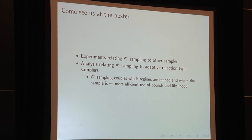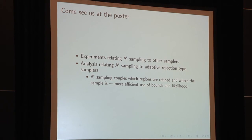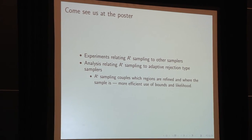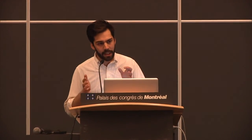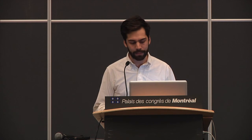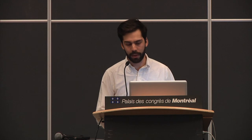At this point I'd normally tell you about experiments, but there isn't a lot of time. We've done interesting experiments relating A-star Sampling to other samplers — please visit us at the poster. We've also done an analysis relating A-star Sampling to adaptive rejection type samplers. A-star Sampling has the interesting property that it can prune regions of space, coupling which regions it refines and where the sample ends up, leading to more efficient use of bounds and likelihoods relative to adaptive rejection type samplers.